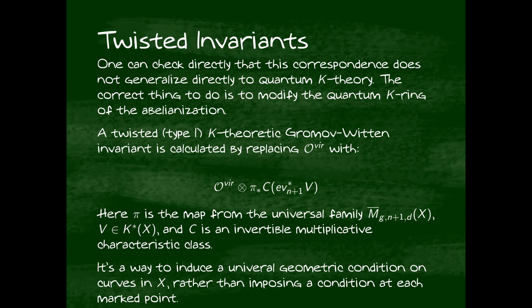What are these? You replace the virtual structure sheaf when calculating your invariant with the pi pushforward and C. You take some class in the K-theory of X, pull it back not to your moduli space but to the universal family, then push down onto the moduli space and take a characteristic class. The intuition is, if I pull back something by an evaluation map, I'm imposing a constraint on the marked point of the curve. If I do this, I'm imposing a constraint on the entire curve, not just at each marked point.